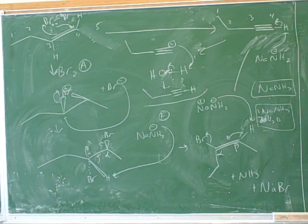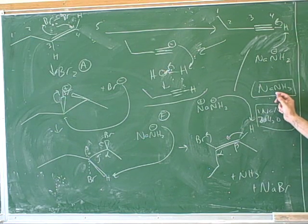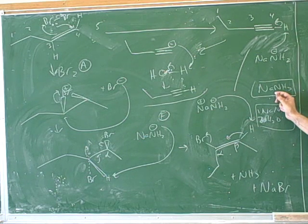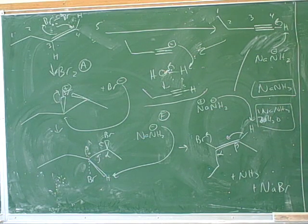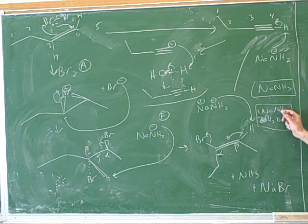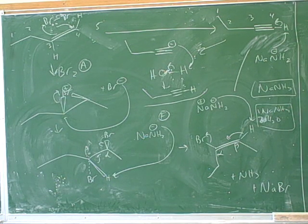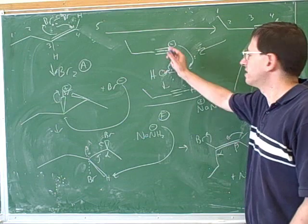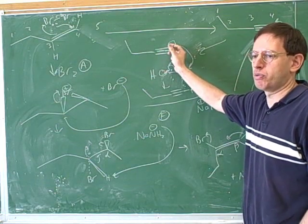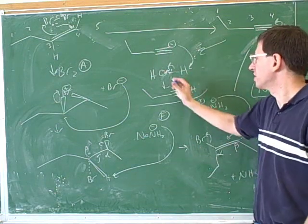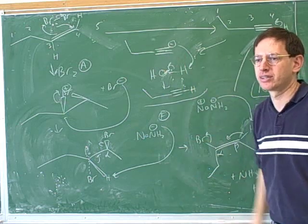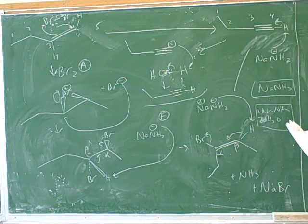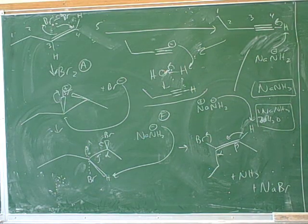So again, to make an internal alkyne, just use sodium amide on a dihalogen to do two eliminations. But to make a terminal alkyne, you have to use sodium amide, but you have to recognize that since it's terminal, the sodium amide will end up deprotonating the alkyne. And if you don't want to leave it deprotonated, you need a separate step where you use water to put the proton back on.